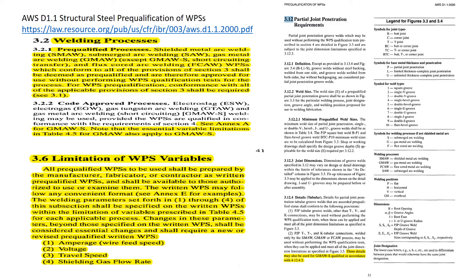You also have the welding positions: F stands for flat, H for horizontal, V for vertical, and OH is overhead. Then you have dimensions: the upper case R is the root opening, the angle sign refers to the groove angles, the lower case F is the root face, and the lower case R stands for the radius of a J or U joint, and so on.